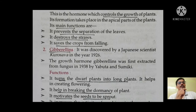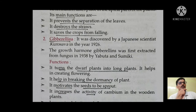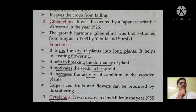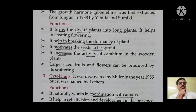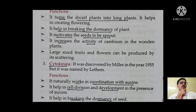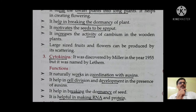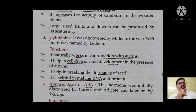Auxin's main functions: it prevents the separation of leaves, destroys straws, and saves crops from falling. Next is gibberellins — the function to remember for the exam is that gibberellins turn dwarf plants into long plants, help in breaking the dormancy of the plant, motivate seeds to sprout, and increase metabolic activity in the cambium in woody plants.